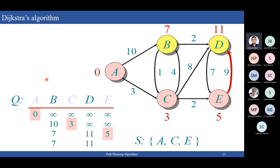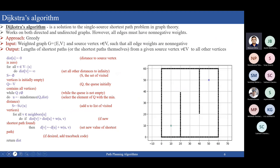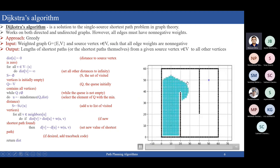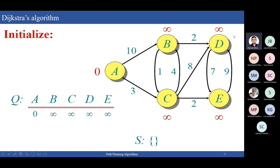The advantage of Dijkstra's algorithm exploring the entire workspace is that Google Maps uses it. Google Maps never tells you that you took the wrong way — even if you take the wrong path, it redirects and gives you the path from that particular node. This is because Dijkstra explores each and every node in the area, so wherever you go, it has some path from that node to the goal. The drawback is that this is very computationally expensive.